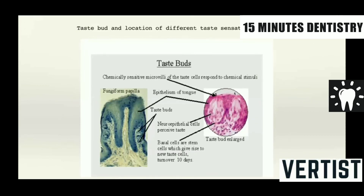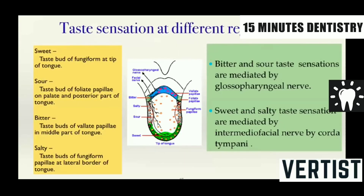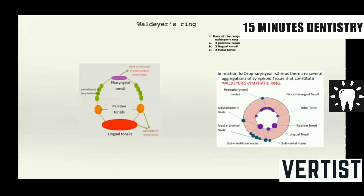The four different taste sensations are sweet, sour, bitter, and salty. Sweet taste buds are at the fungiform papillae at the tip of the tongue. Sour taste buds are at the foliate papillae on the lateral and posterior part of the tongue. Bitter taste buds are at the circumvallate papillae in the middle-posterior part of the tongue. Salty taste buds are on the lateral border of the tongue. Bitter and sour are mediated by the glossopharyngeal nerve, while sweet and salty taste sensations are mediated by the chorda tympani of the facial nerve. The Waldeyer's ring at the base of the tongue includes two palatine tonsils, two lingual tonsils, and two tubal tonsils.